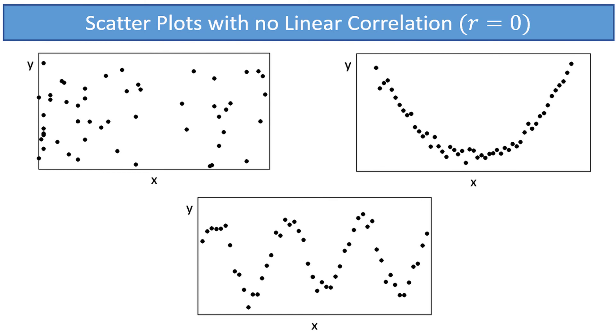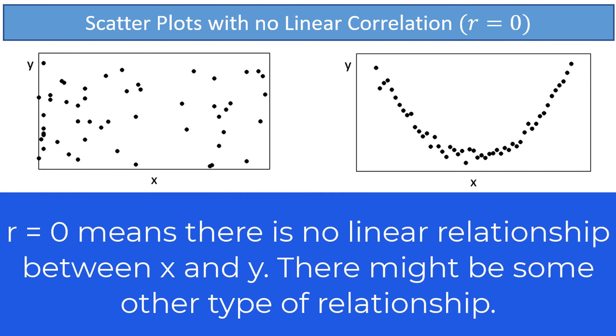So the important thing to remember is that, just because the correlation coefficient is 0, doesn't mean there is no relationship between x and y at all. It just means that there is no linear relationship. There might be some other sort of relationship.